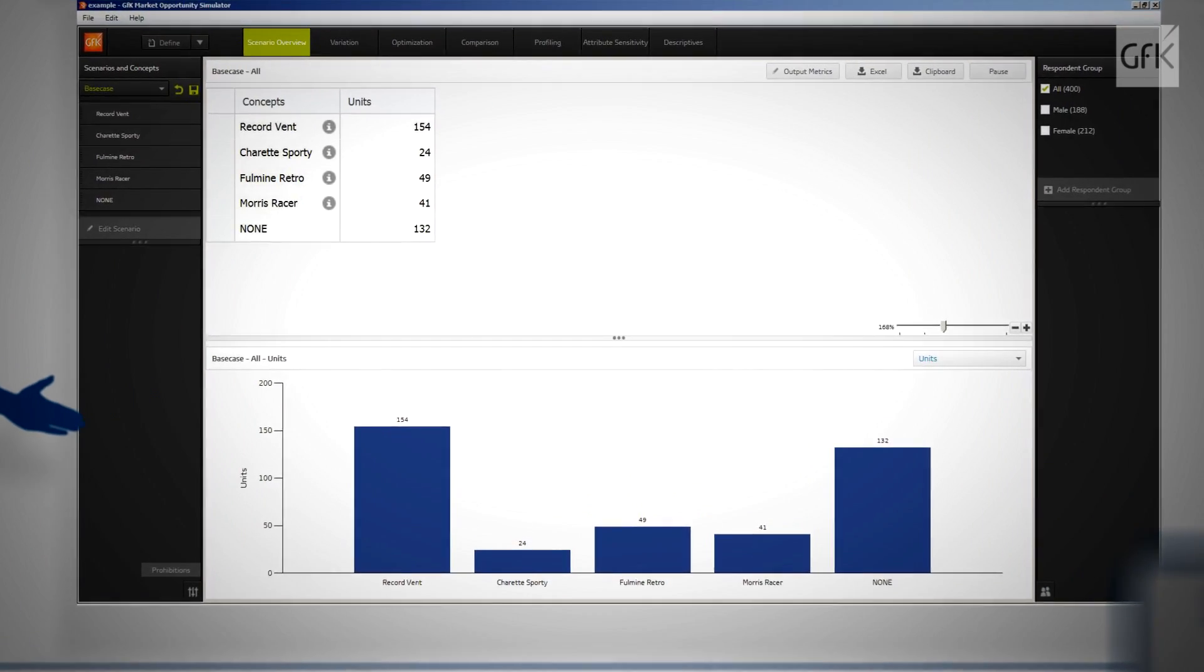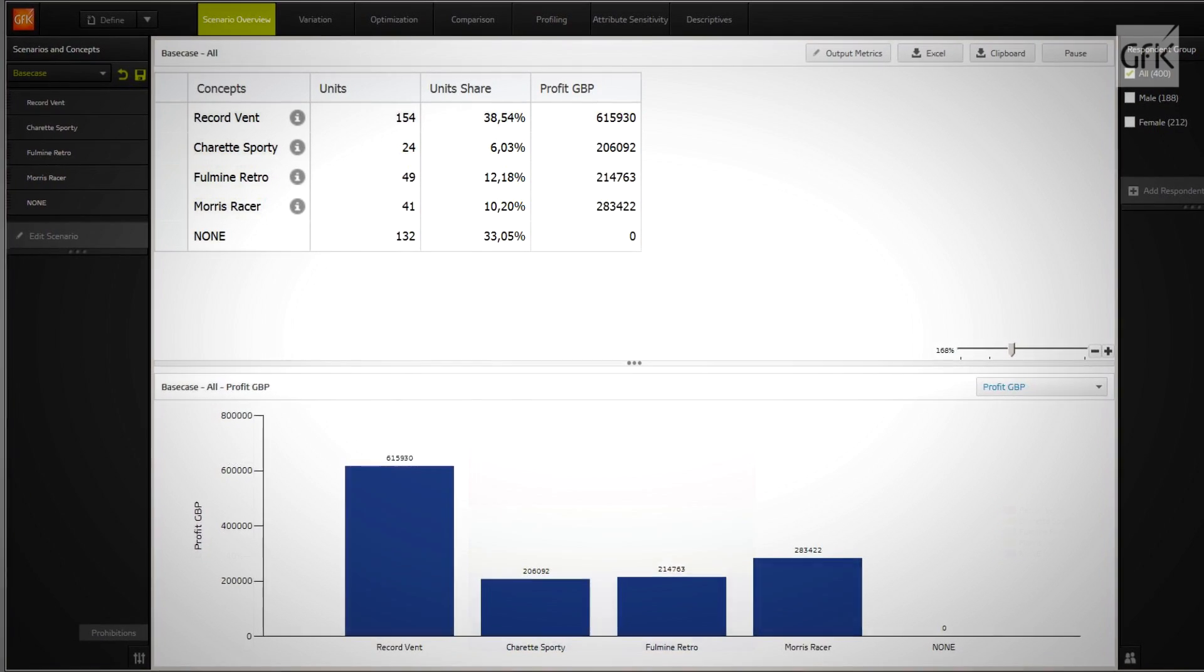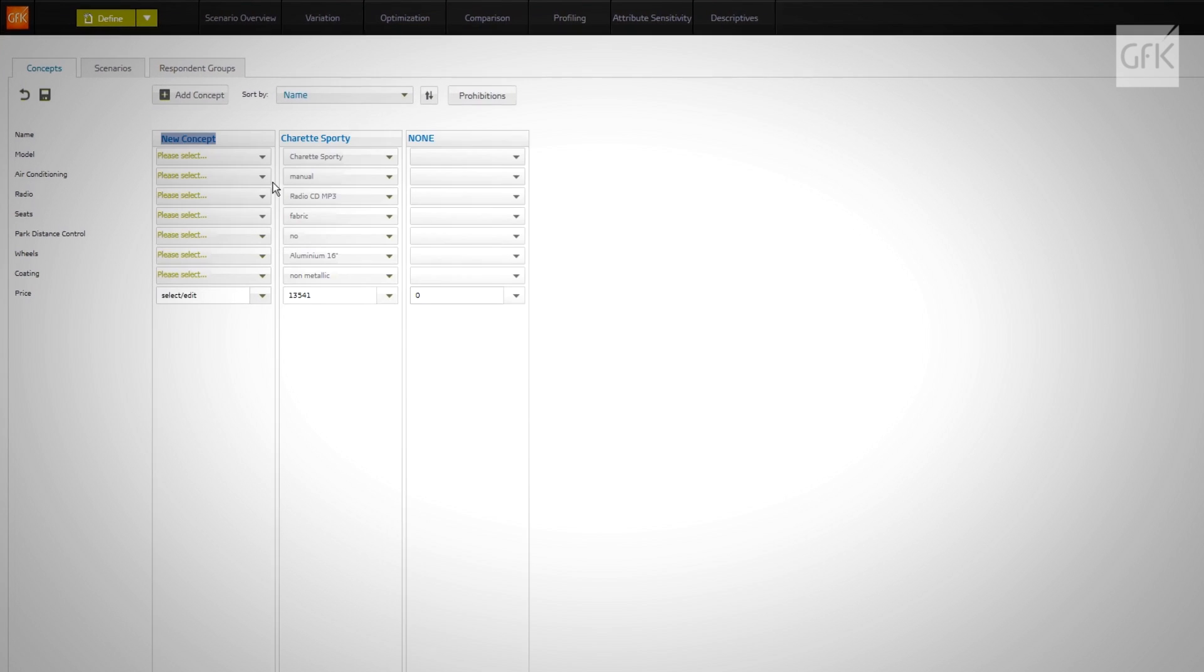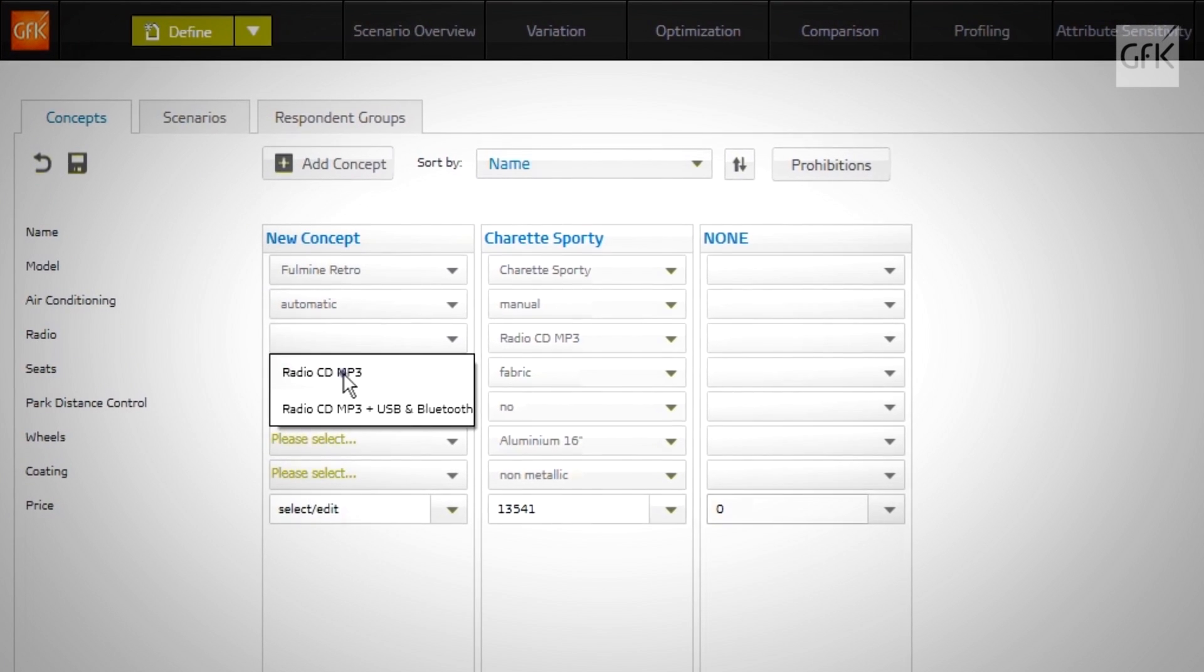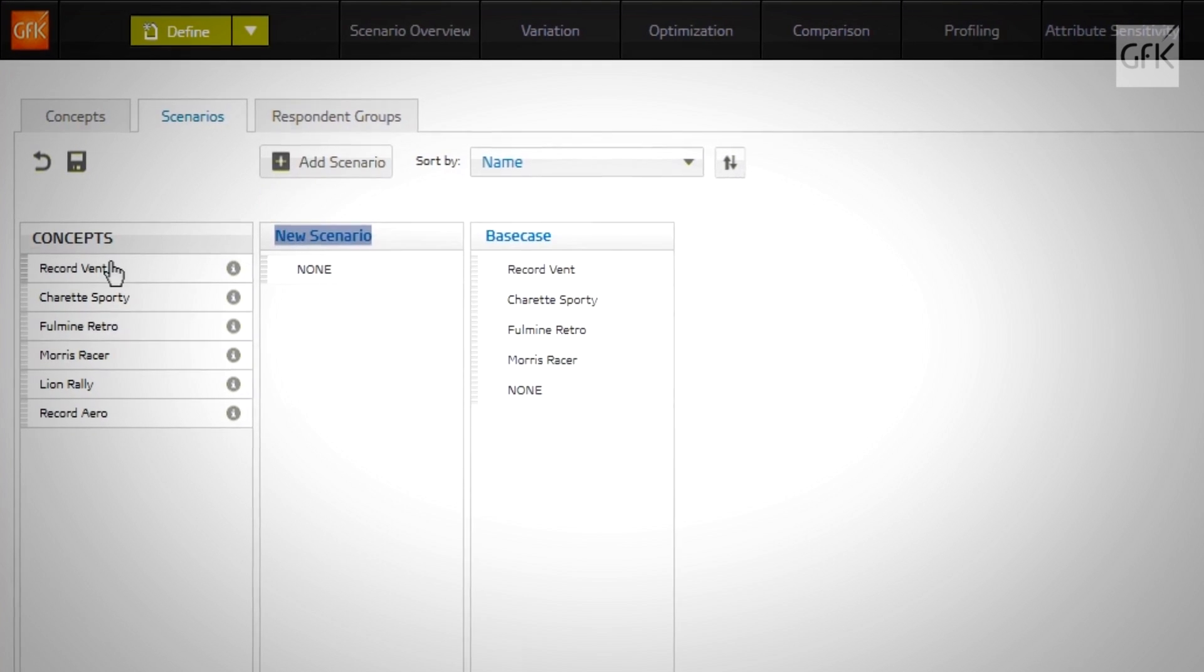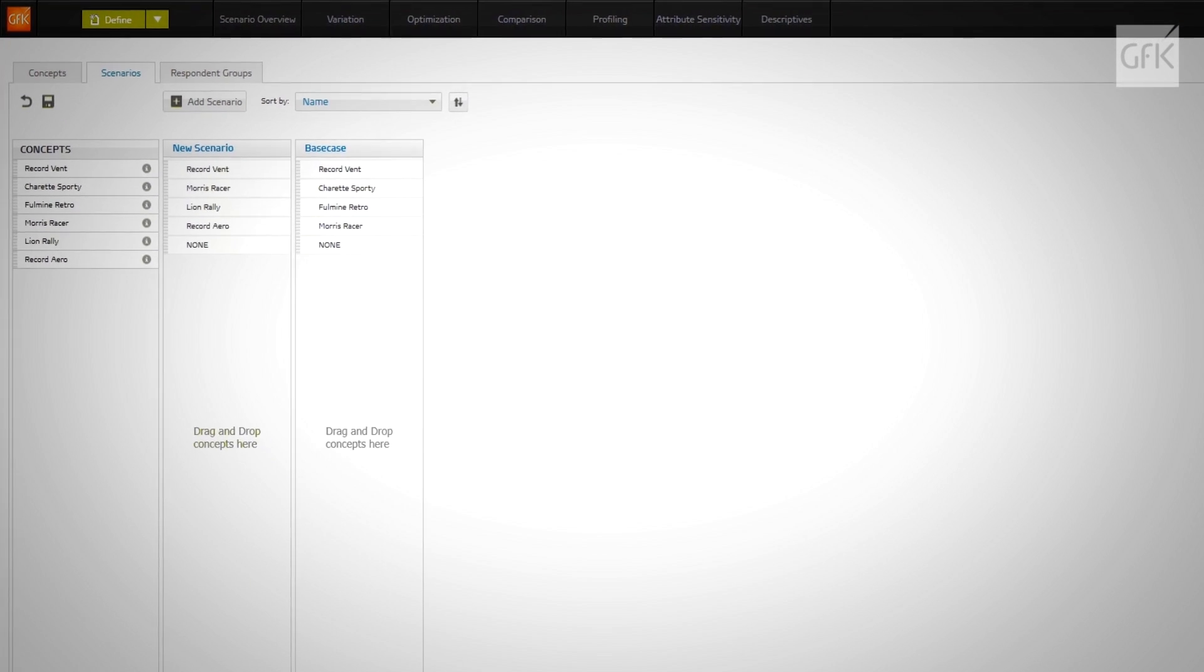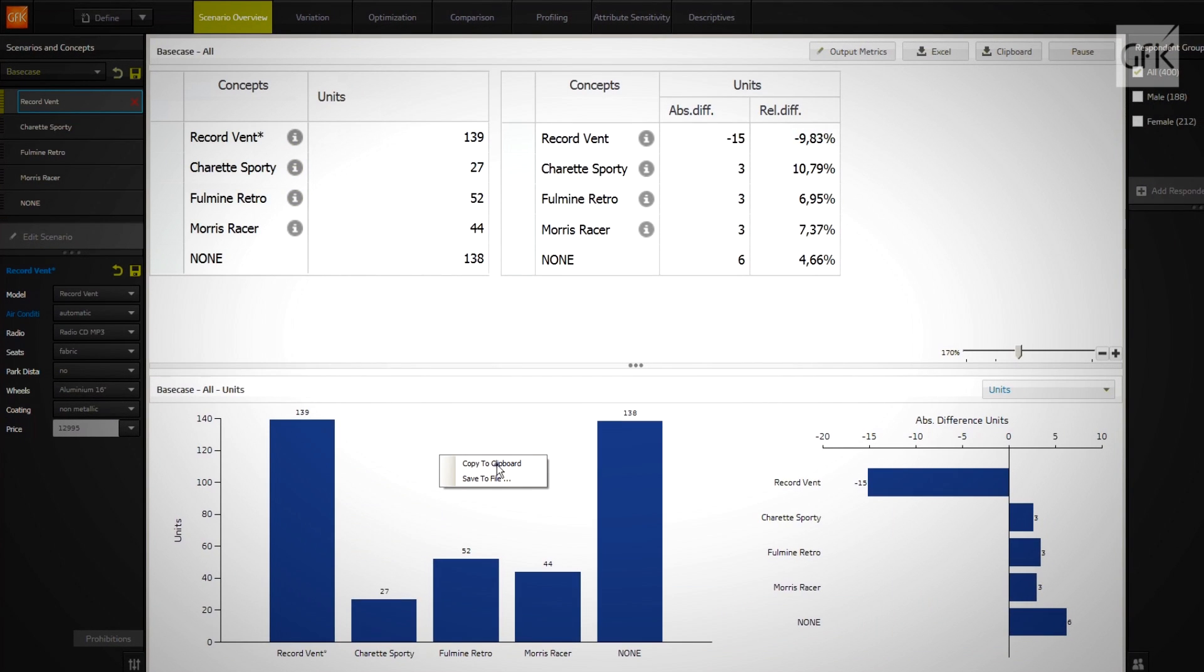It enables decision makers to quickly set up market scenarios and predict the outcomes for a variety of metrics, including profit. You can use convenient drop-down lists to define concepts, then drag and drop to create and change any scenario you wish. View the results either as tables or graphs, and export to Office applications when you create presentations or reports.